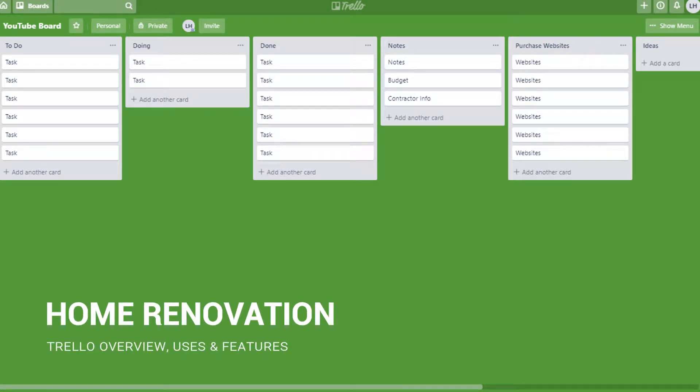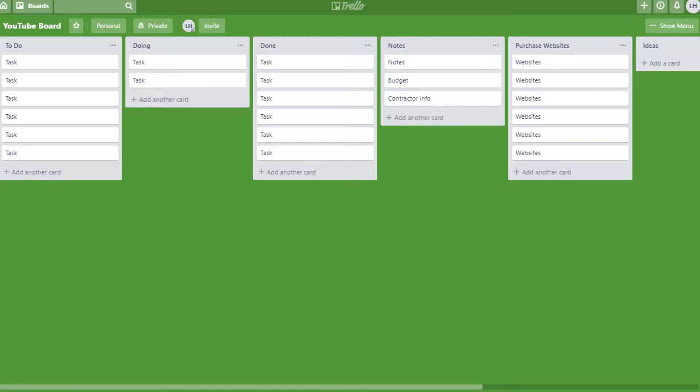Home renovation. So this is a project board that is a hybrid of a couple of different kinds of uses. There is an action component with tasks as cards moving between the to-do, doing, and done lists. But there's also a notes function where you can keep plans, contractor contact information, great websites for purchases, a link for your budget spreadsheet, etc.